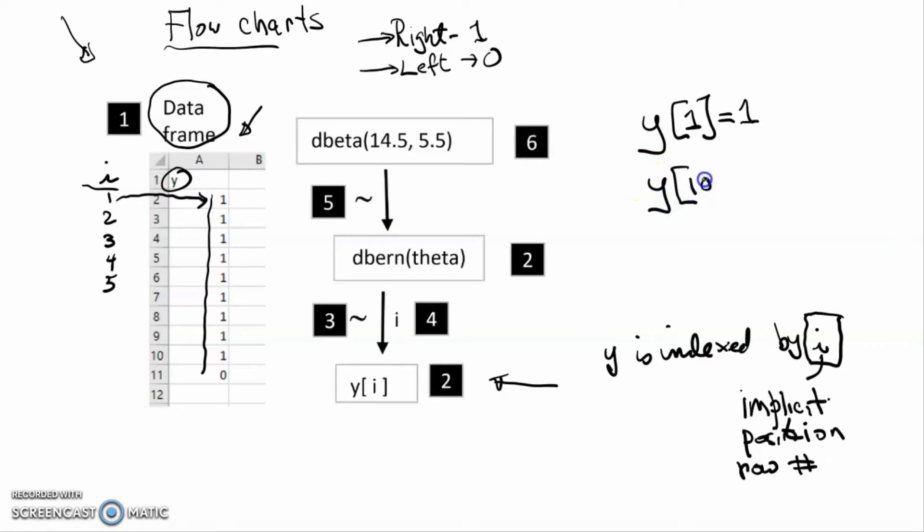In contrast, y at location 10 is equal to 0. So 6, 7, 8, 9, 10, y at location 10 is equal to 0.